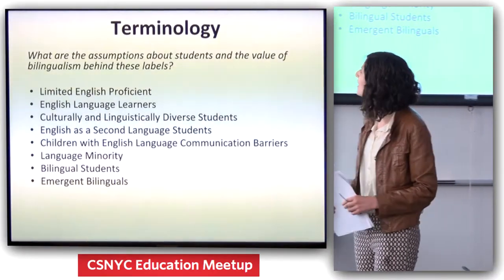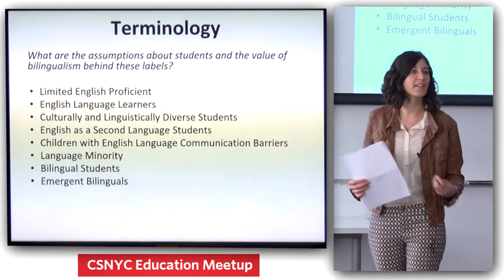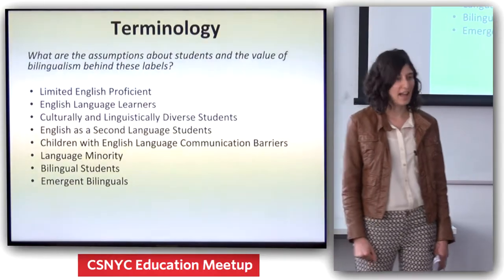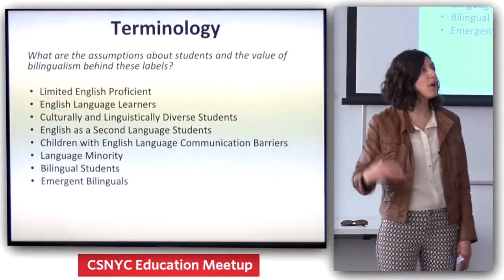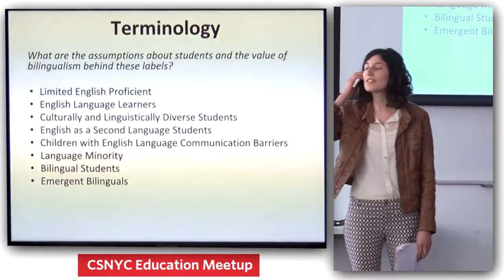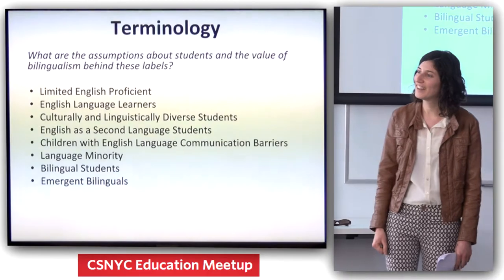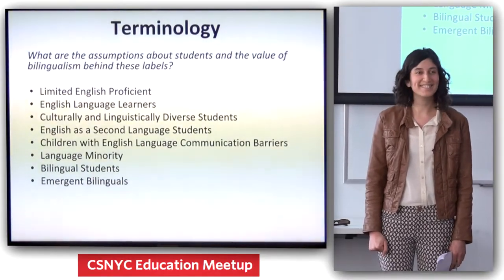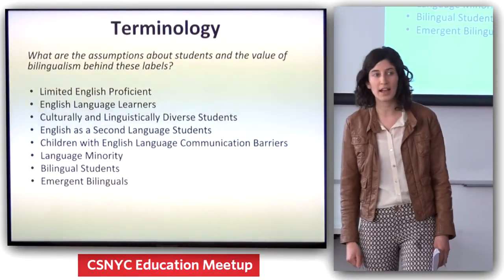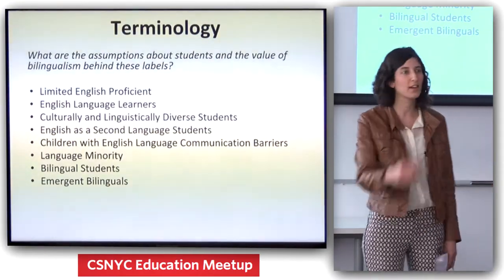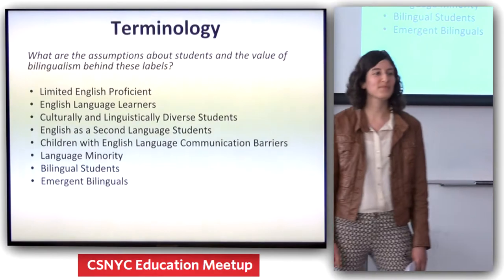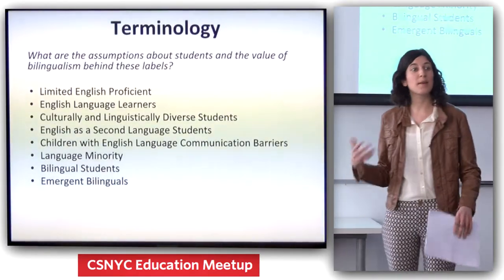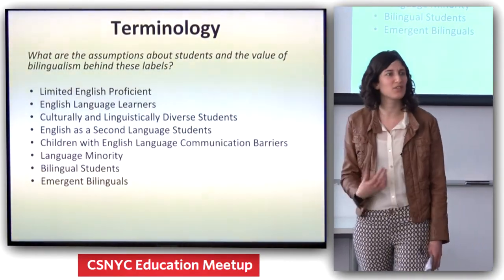Let's talk for a second about what assumptions about students and bilingualism might be embedded in these terms. 'English as a second language' assumes they only know their language and English, as opposed to their 17th. We don't know if English is their second or third or fourth. 'Language minority' seems really bizarre for certain schools where everyone might be speaking Spanish. And 'limited English proficient' — just because they don't speak academic English doesn't mean they can't talk with people. That one has a little bit of a stigma embedded in it, that students are in some way limited. It also implies that other students aren't learning English.